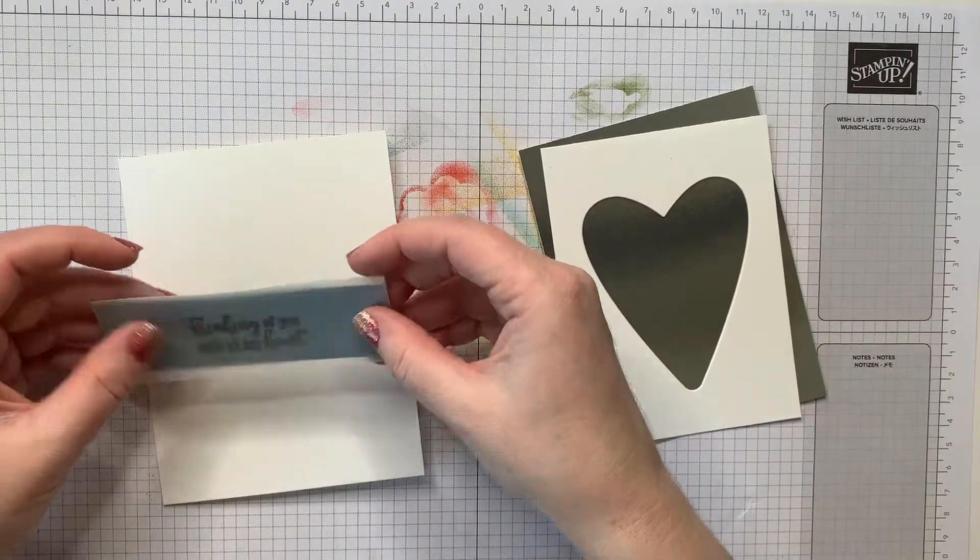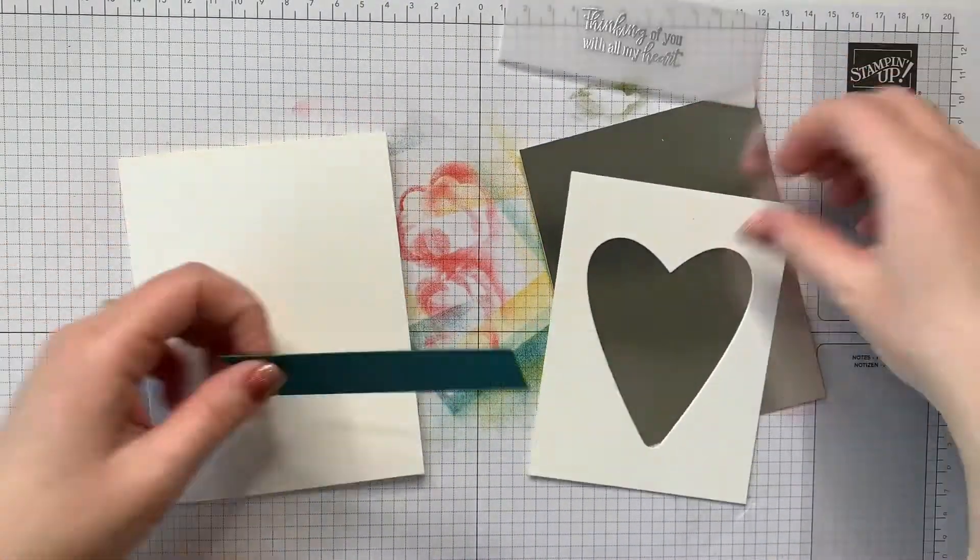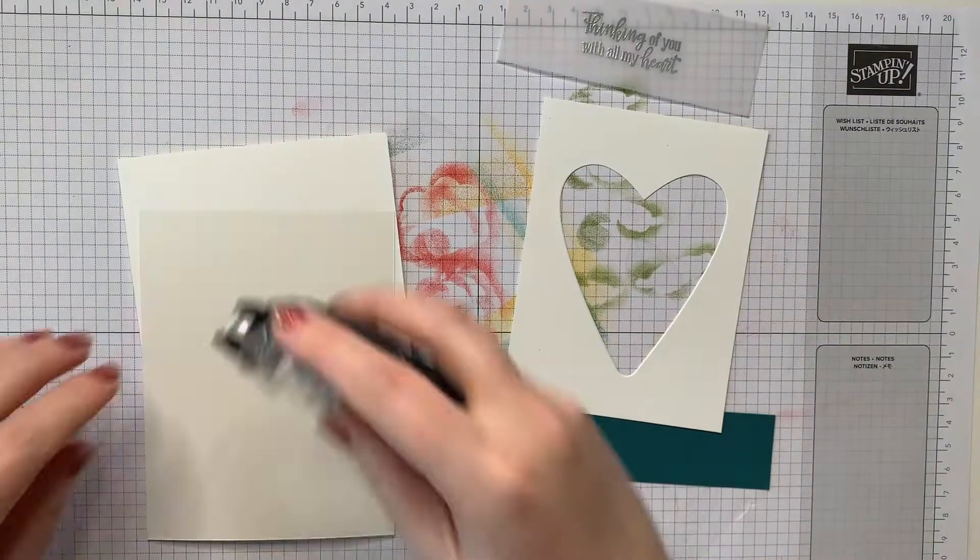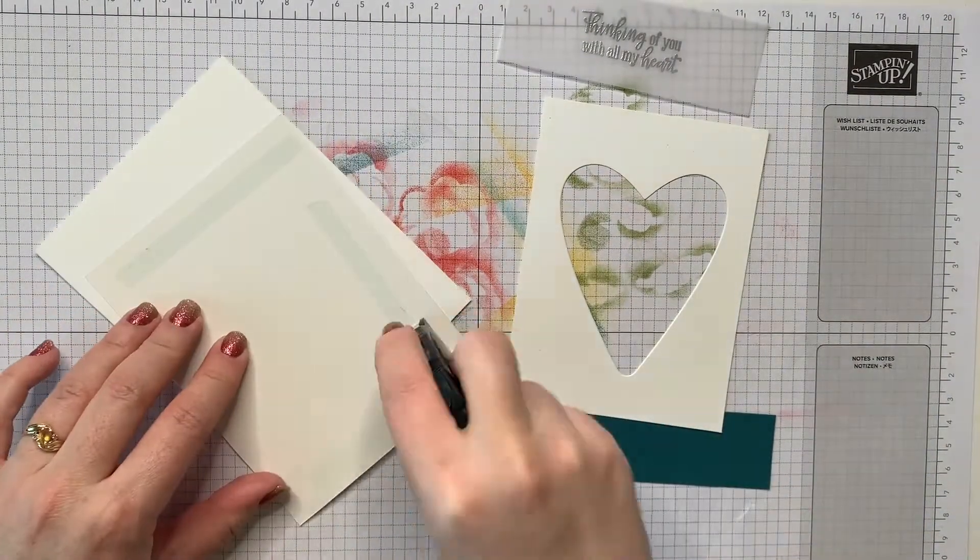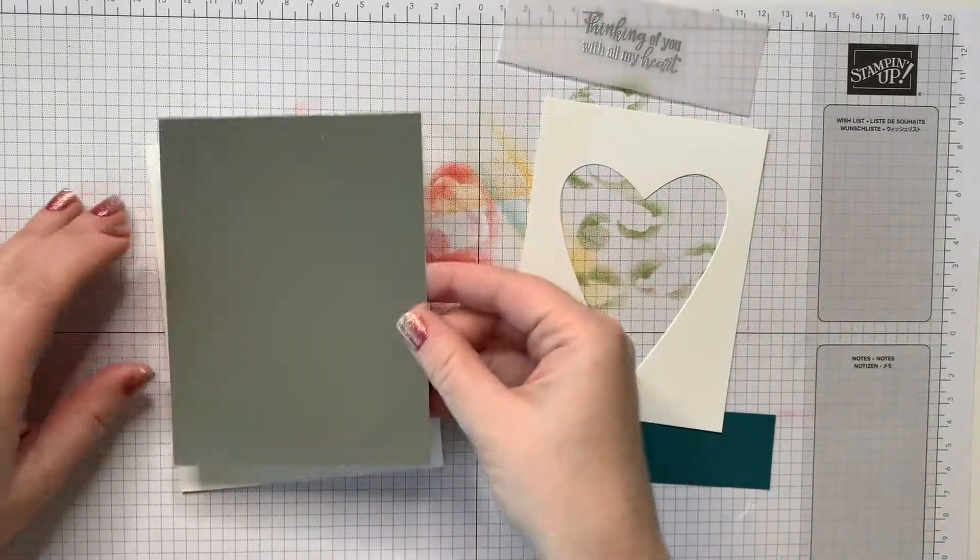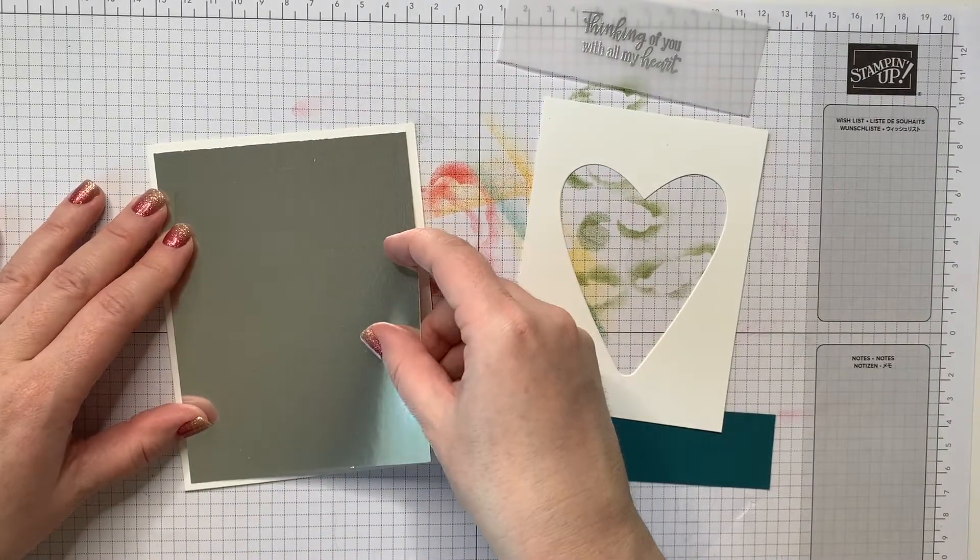I have a piece of silver foil sheet that I am using as a card mat on the first card. I'm just going to get that adhered down with some snail adhesive onto a whisper white card base.